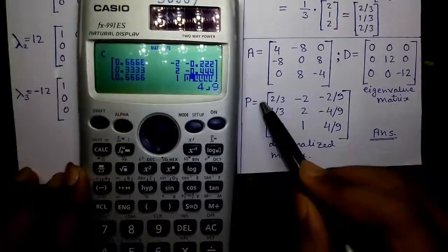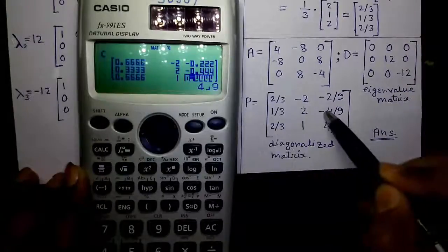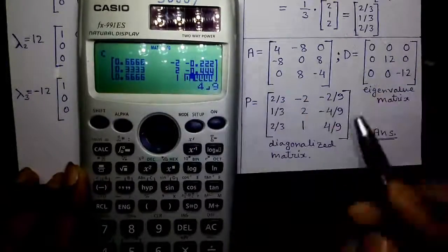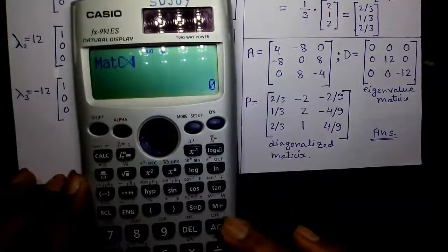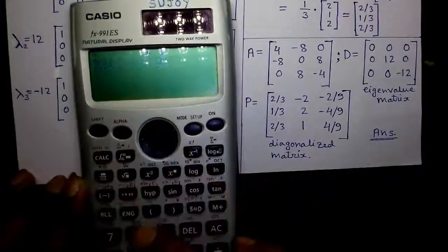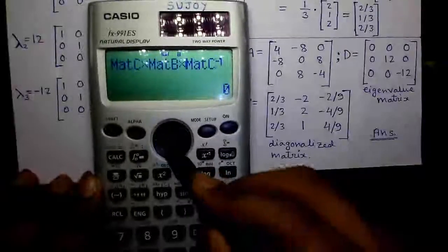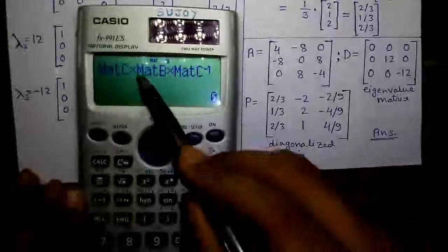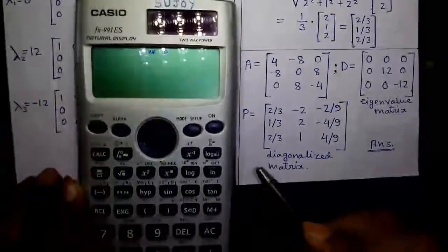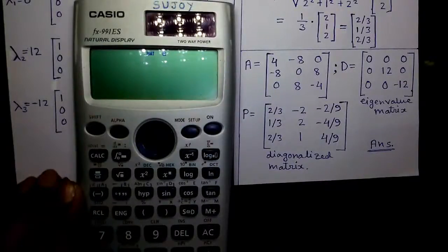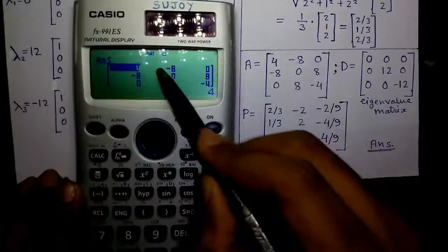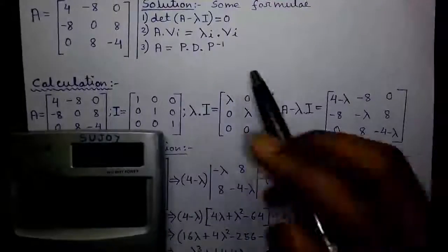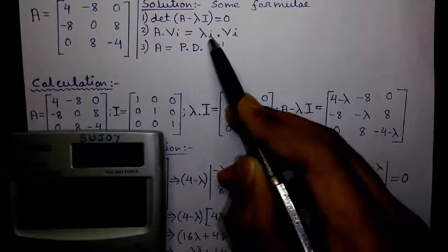Now we will multiply matrix P into matrix D into inverse of matrix P directly on this calculator. In other words, we will do matrix C into matrix B into inverse of matrix C. That is equal to our original matrix A: 4, minus 8, 0, minus 8, 0, 8 and 0, 8, minus 4. So, our third formula A equals to P into D into P inverse is proved.